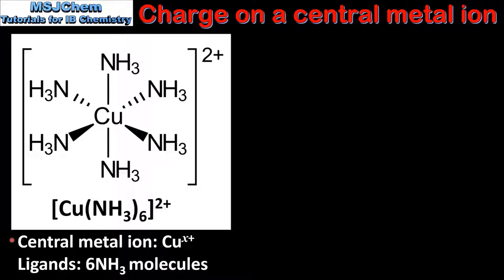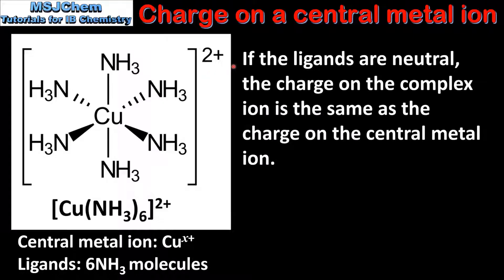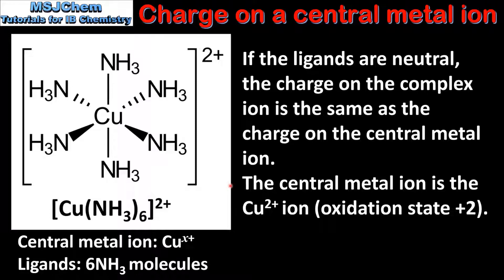In this complex ion the central metal ion is a copper ion. The ligands are 6 ammonia molecules and the charge on the complex ion is 2+. If the ligands are neutral, the charge on the complex ion is the same as the charge on the central metal ion. Ammonia molecules are neutral, so the central metal ion is the copper 2+ ion, which has an oxidation state of +2. To summarize: if all the ligands are neutral molecules, the charge on the central metal ion is the same as the charge on the complex ion.